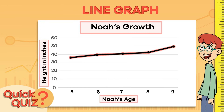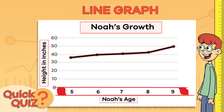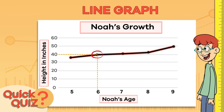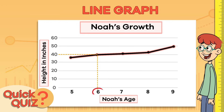Quick quiz! How tall was Noah when he was 6 years old? The bottom of our graph tells us Noah's age. So, let's find the number 6 and follow it up to the black graph line. Now let's follow the line over to the inches and see where it lines up. Looks like it's right here at 40 inches. So, at 6 years old, Noah was 40 inches tall. Now, see if you can figure out how tall Noah was when he was 9 years old. At age 9, Noah was 50 inches tall. Great job!